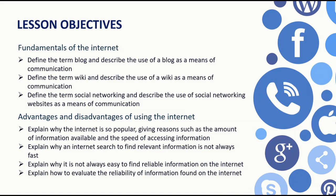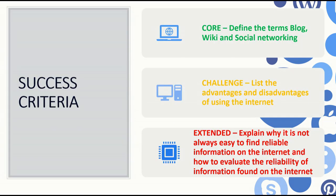The objectives we need to cover as part of this lesson are to understand what are the fundamental terms used as part of the internet and what are the advantages and disadvantages of using the internet. As success criteria, you need to at least be able to define the terms blog, wiki and social networking. As a challenge, you must be able to list the advantages and disadvantages of the internet. And as an extension task, we are going to think about why it's not easy to find reliable information on the internet.